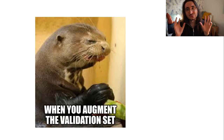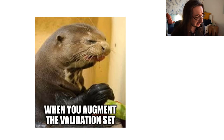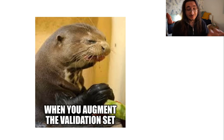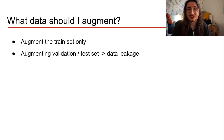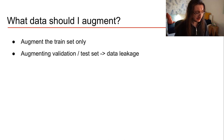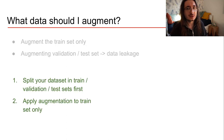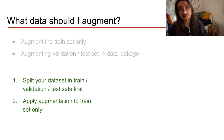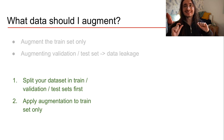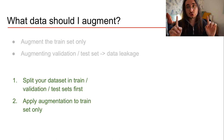There's a rookie mistake I see done time and again: augmenting the validation set or the test set. Don't do that. You should only augment the train set. If you augment the validation and test set, you may introduce data leakage. To do augmentation the right way, first split your dataset into train, validation, and test sets — and then only at that point apply data augmentation to the train set only.